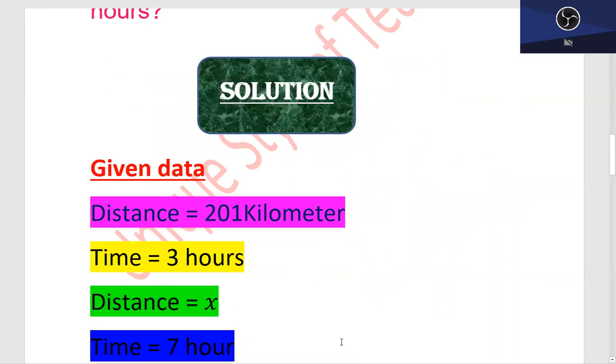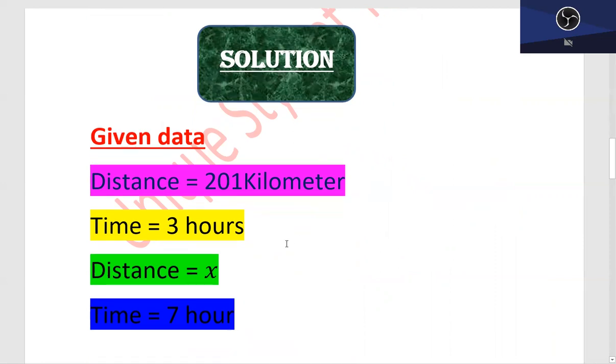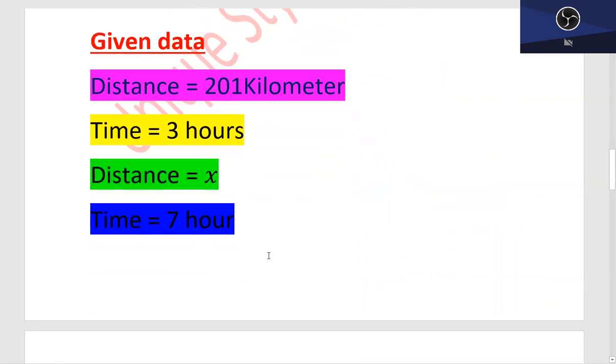First, the given data is distance equals 201 km, time is 3 hours. Then distance equals x and time is 7 hours.